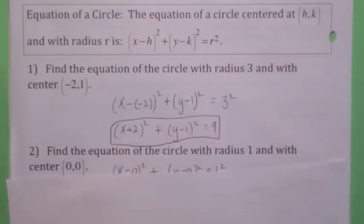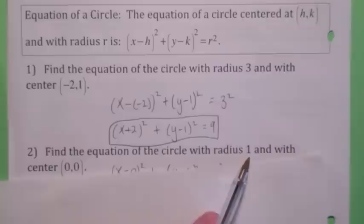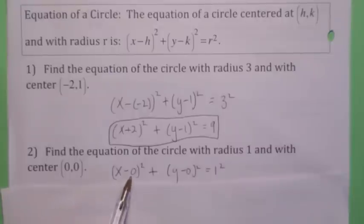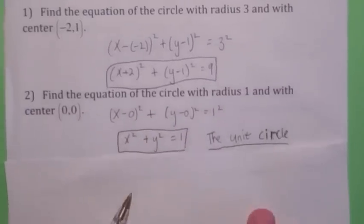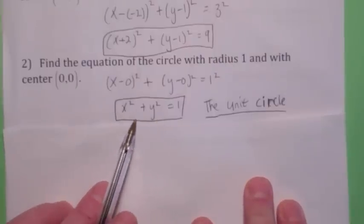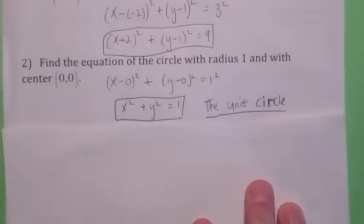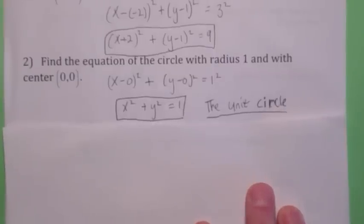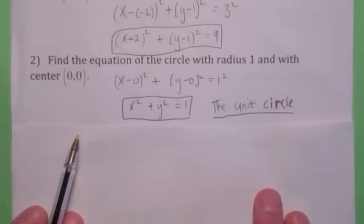What if we're told the radius is 1 and the center is (0, 0)? That's even easier — just plug in 0 for h, 0 for k, and 1 for r, and you get x squared plus y squared equals 1. This is the simplest circle you can get. The center is (0, 0) and radius is 1; we call that the unit circle, and it's very important in Math 142 when we start talking about trig.